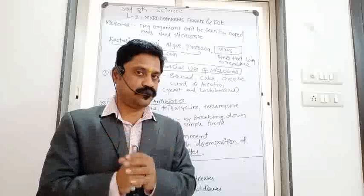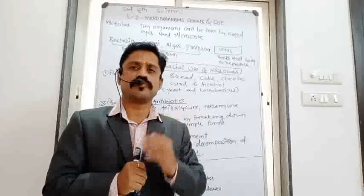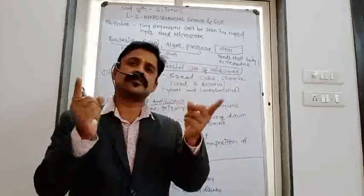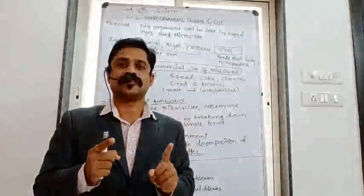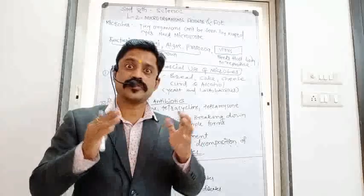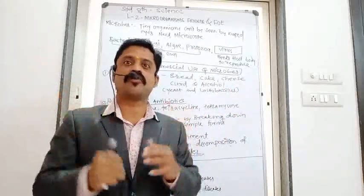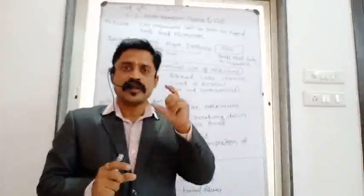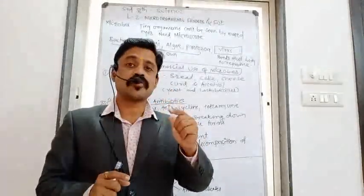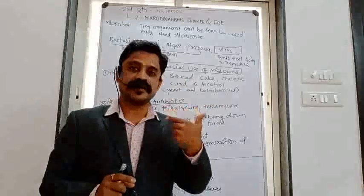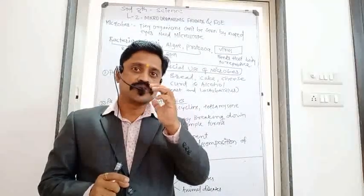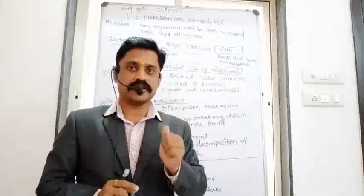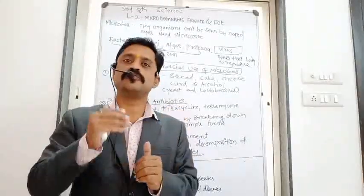Let's begin with the word 'micro.' Micro means very tiny. Most organisms in our surroundings we can see with our naked eyes because of their large size — they are macro-organisms. Exactly opposite to macro, microorganisms are tiny organisms which cannot be seen by our naked eyes. To see them we need a device called a microscope.